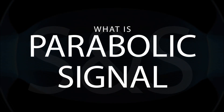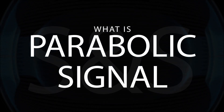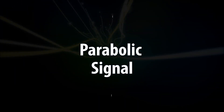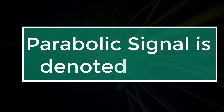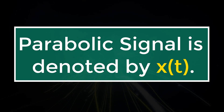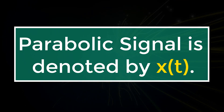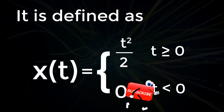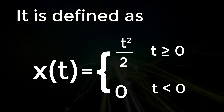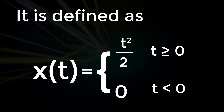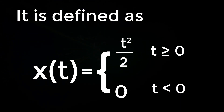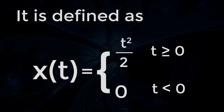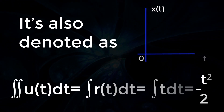What is a parabolic signal? The parabolic signal is denoted by x(t). It is defined as x(t) = t²/2 where t ≥ 0, and x(t) = 0 where t < 0.